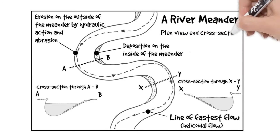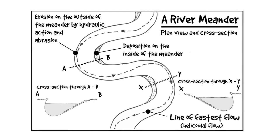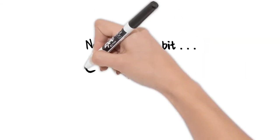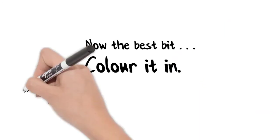Don't forget once again give your diagram a title, underline it, and there you have a river meander with plan view and cross section. Now the best bit comes after all, you get to color it in.